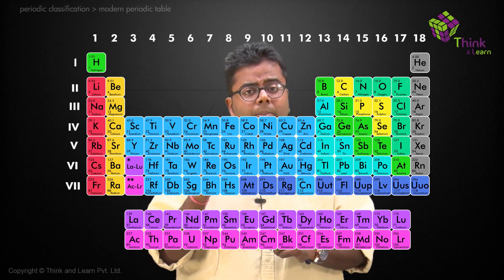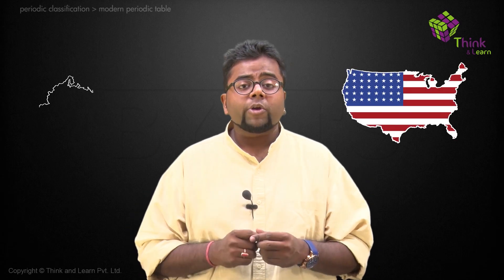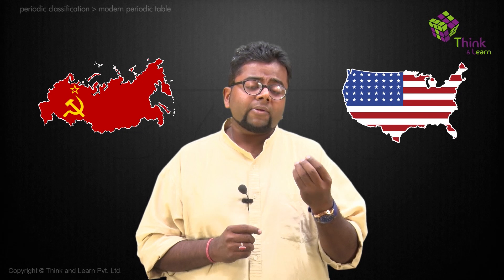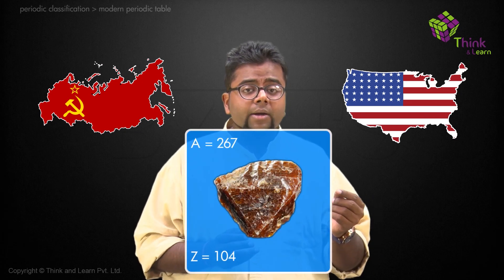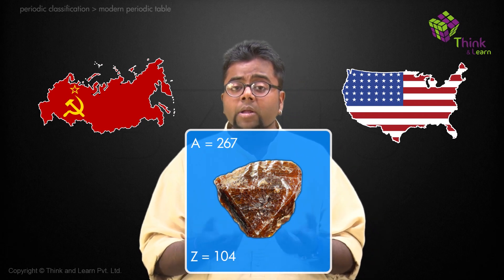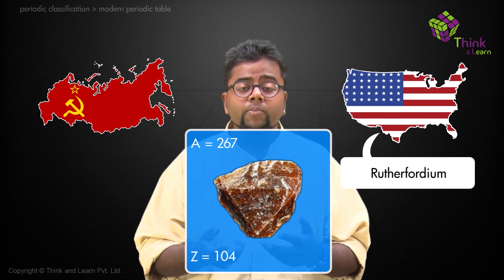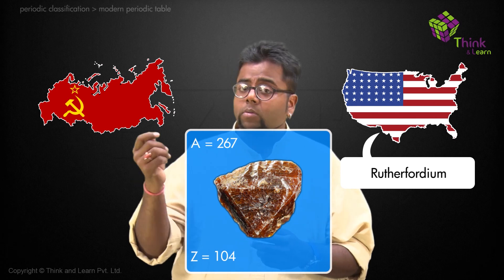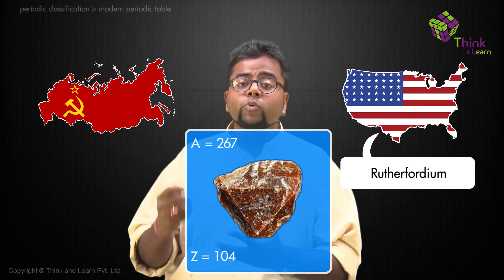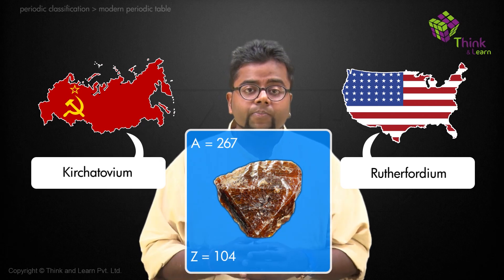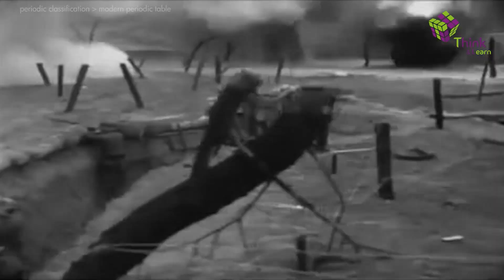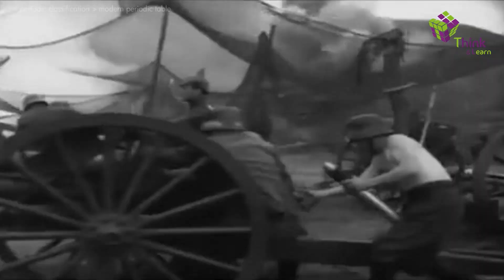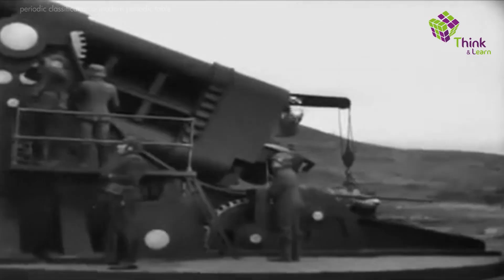There was a problem that occurred between the United States of America and the Soviet Union, which is Russia. They discovered an element with the atomic number 104. The Americans said that since they found that element, they would name it Rutherfordium. But the Russians said no, we discovered it, so we will name it Kurchatovium. This led to a major problem in the world of chemistry because there were two nations fighting for the name.